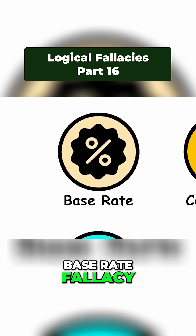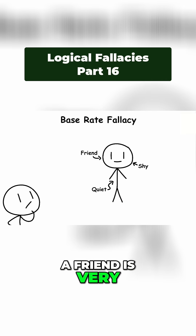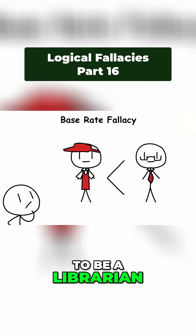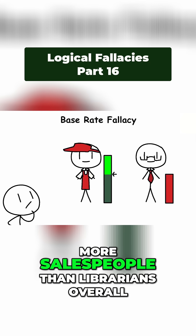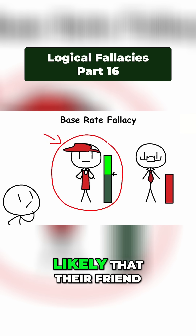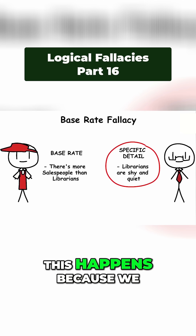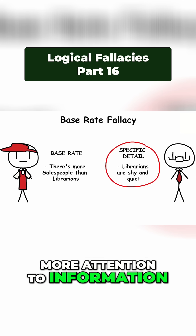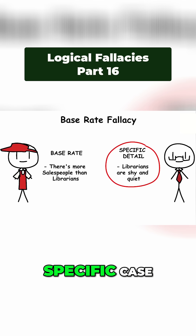Base Rate Fallacy. If someone hears that a friend is very shy and quiet, they might think the friend is more likely to be a librarian than a salesperson, even though there are far more salespeople than librarians overall, hence making it more likely that their friend is actually a salesperson. This happens because we tend to ignore the base rate and pay more attention to information pertaining only to a specific case.